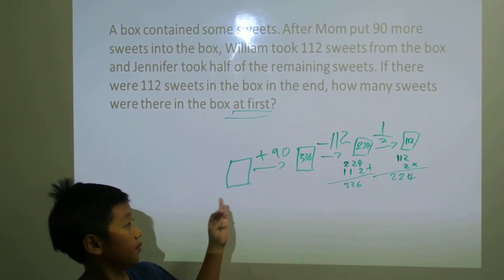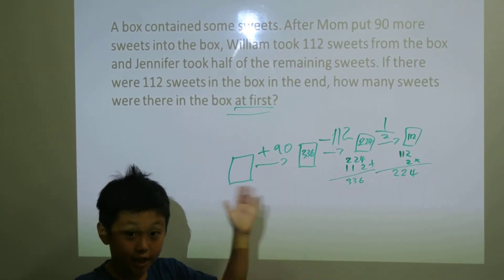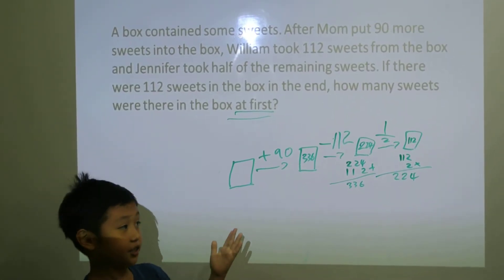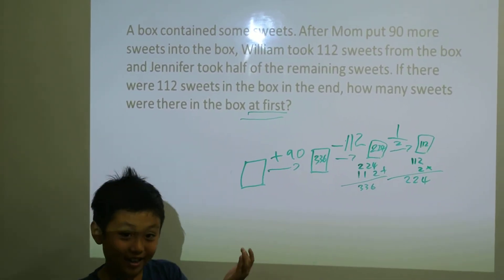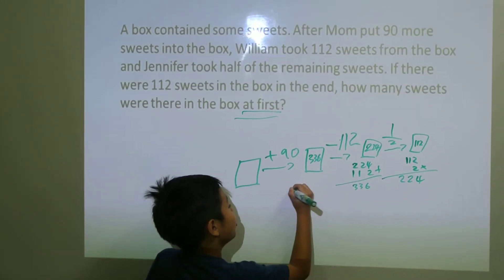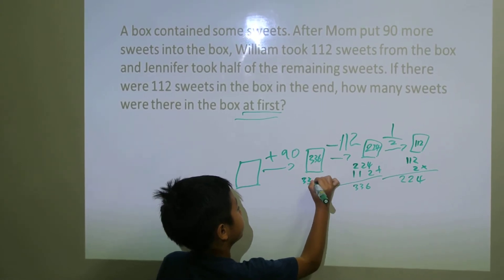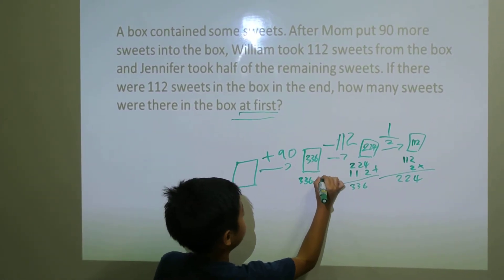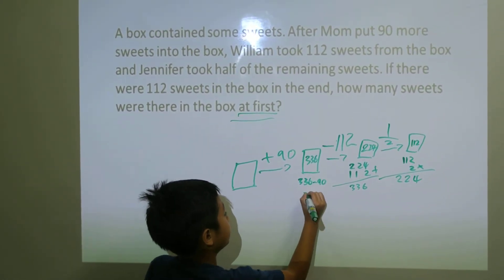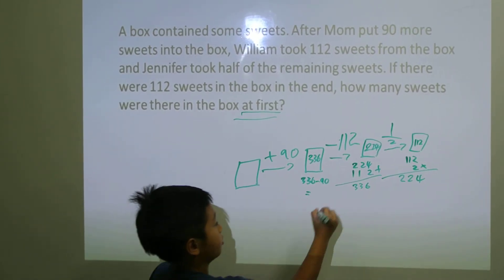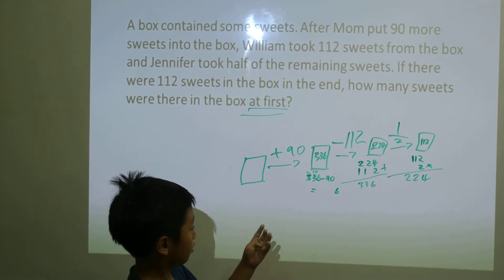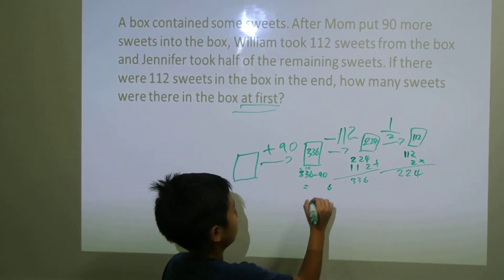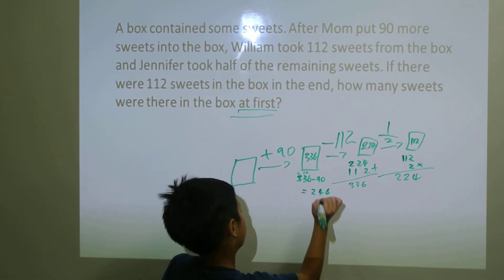Now we do 336 and 90. So the opposite of add is, of course, minus. So we minus 336 minus 90, which equals 246.